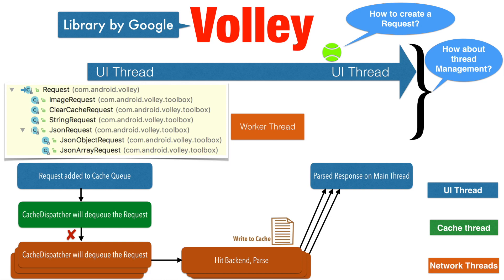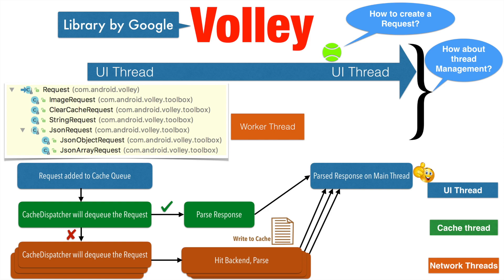So that is one flow where a cache miss happened. However, there is another possibility where the cache dispatcher thread will actually hit the cache successfully and find something available in the cache. In that case, it will directly parse the response from the cache and hand it back to the UI thread. This is much more efficient — you don't have to go through the process of hitting the backend, parsing the response from the backend, and then handing it back to the main thread. You can avoid that more resource-intensive operation and rather use the cached response to immediately give back the response to the main thread.